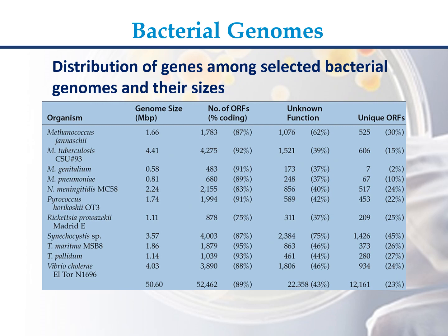T. maritima MSB8: genome size 1.86 Mb, 1879 ORFs (95%), unknown function 863 (46%), unique ORFs 373 (26%). T. pallidum: genome size 1.14 Mb, 1039 ORFs (93%), unknown function 461 (44%), unique ORFs 280 (27%). Vibrio cholerae El Tor N16961: genome size 4.03 Mb, 3890 ORFs (88%), unknown function 1806 (46%), unique ORFs 934 (24%).